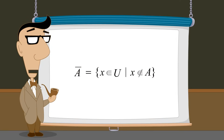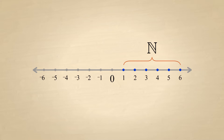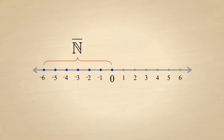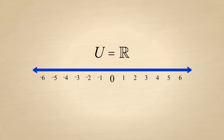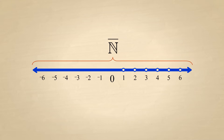The result we get when we take the complement of a set will depend on how we define the universal set. For instance, if the universal set is the set of integers, then the complement of the set of natural numbers is the set of integers that are not natural numbers — in other words, all the negative integers plus the number zero. However, if we define the universal set to be the set of real numbers, then the complement of the set of natural numbers is the set of real numbers that are not natural numbers — in other words, the entire number line excluding the points which represent positive integers.